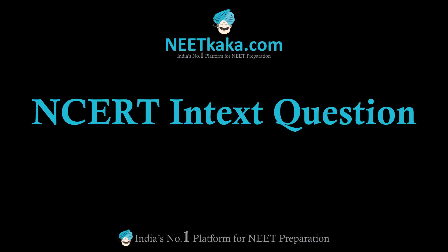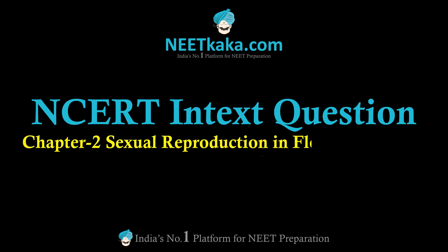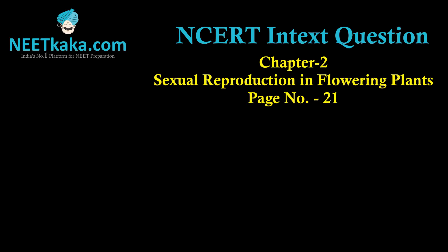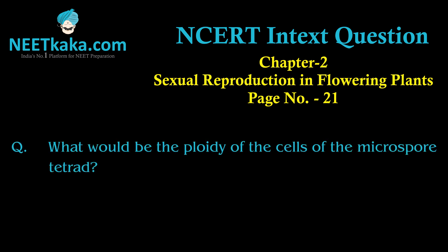Hello guys, in biology CRT text question series, we have 12th class chapter number 2, that is sexual reproduction in flowering plants, page number 21. The question is: as the anther develops, the cells of the sporogenous tissue undergo meiotic divisions to form microspore tetrads. What would be the ploidy of the cells of the tetrads?